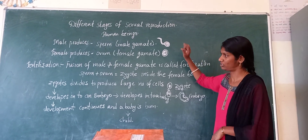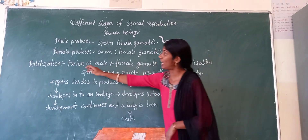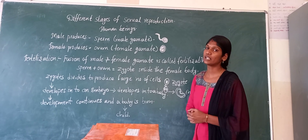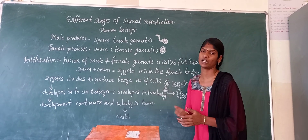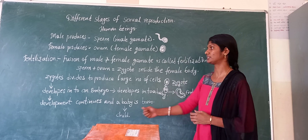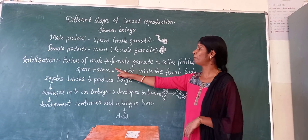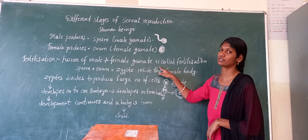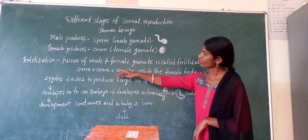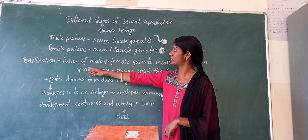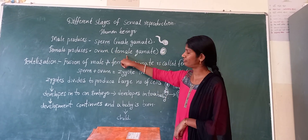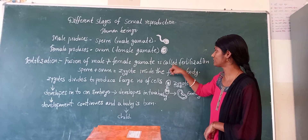When the male gamete and the female gamete come together, that is called fertilization. Let me give you the definition of fertilization. Fertilization means — what is fertilization? If asked to define fertilization, we should answer: fusion of male and female gametes is called fertilization. Fusion of male gamete and female gamete — that is fertilization.